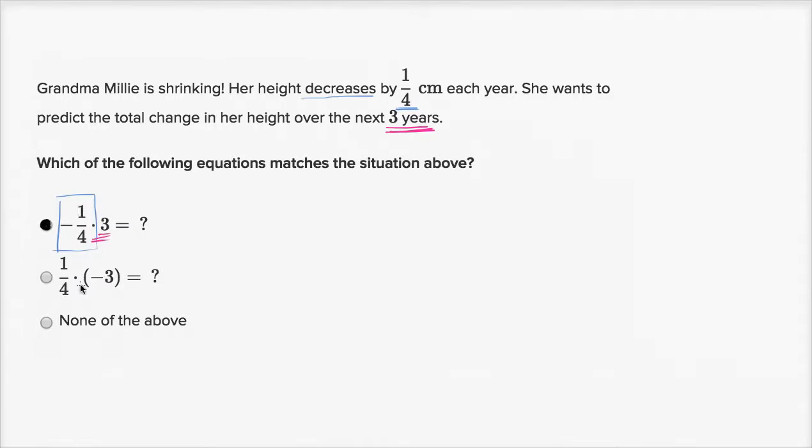Now the second choice would evaluate to negative three-fourths if you multiply positive one-fourth times negative three, but this doesn't follow as naturally from this statement. We're decreasing by a fourth, so I like putting the negative in front of the fourth, and then we're going forward in time by three years. It feels weird to put a negative on the three because we're not going backwards in time. So even though this expression evaluates to the same thing as this first one, the first one seems to better match what this statement is describing.